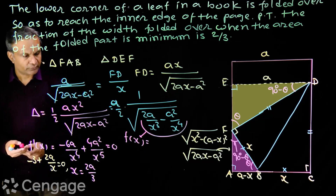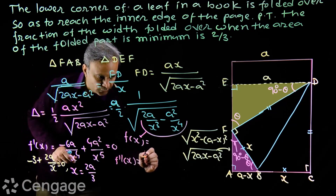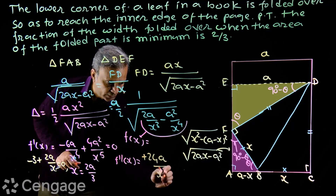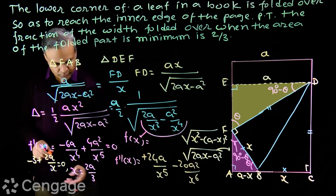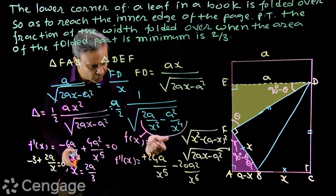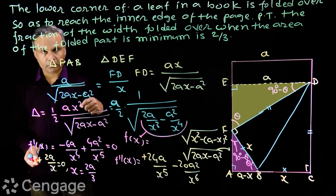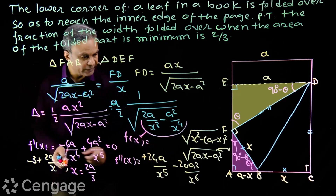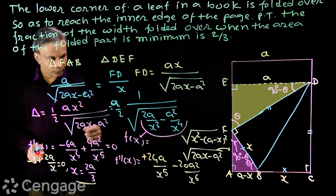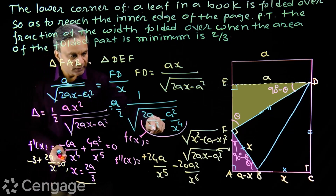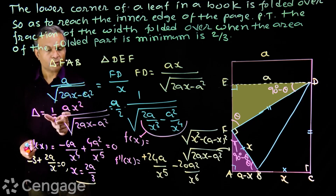We verify this is a maximum using the second derivative test. The double derivative of f(x) is plus 24a over x to the power 5 minus 20a squared over x to the power 6. Substituting x = 2a/3, the double derivative is negative, confirming x = 2a/3 is a point of maxima for f(x). Therefore, it is a point of minima for the area function.